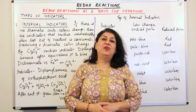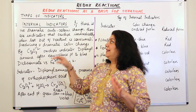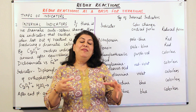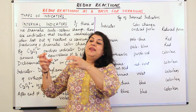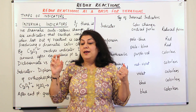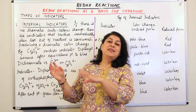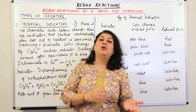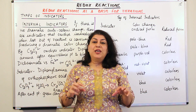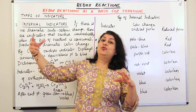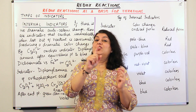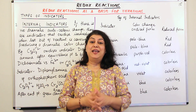We are now going to cover the second category of indicators: internal indicators. In the case of self indicators, one of the reactants itself was colored and underwent a change in color. With internal indicators, the reactants may not change color, or they may be colorless, or the solution may be colored yet does not show an exact color change at the endpoint.